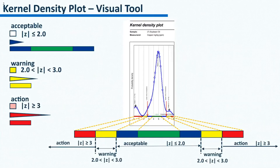The color band at the bottom of the plot is coded similarly as the triangles in the chart of z-scores: blue for acceptable, yellow for warning, and red for action. To sum it up, the fourth part of the report provides graphs to describe the data distribution.